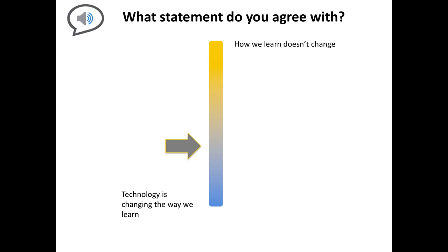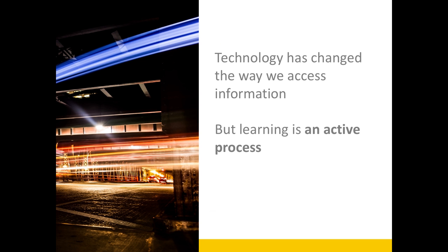I opened up with an interactive activity around whether technology changes the way we learn, or whether the way we learn really stays the same. My personal opinion is technology changes the way we access information. Learning is an active process — it doesn't really change how we wire and rewire our brains. Being able to access information quickly can actually replace the need for a learning experience, because so much of our learning is knowledge dumps when they really need to be performance-focused.